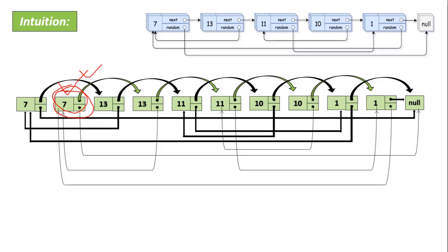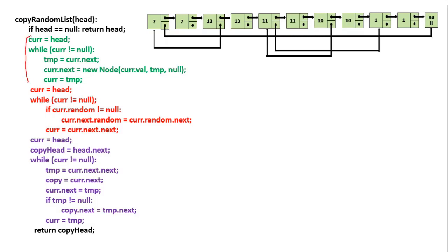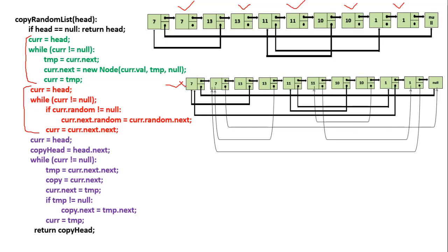Now, how can we insert a node with next pointer and random pointer where the random pointer is null? Then, how can we fix the random pointer? Then, how can we connect each node by skipping one node? Let's see how we can do that using pseudocode. This is the pseudocode to solve this problem. This code will insert nodes 7, 13, 11, 10, and 1 as new nodes with next and random pointers, but the random pointer points to null. Then this code will fix the random pointer. I'm not going to walk through the pseudocode in detail — I'll leave resources for you to understand this problem.